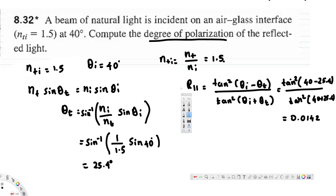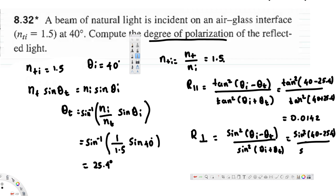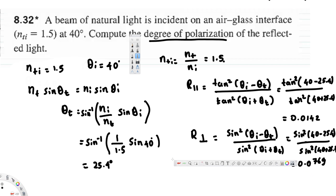Now let's find the reflectance at perpendicular. The equation is sin squared(θ_i − θ_t) divided by sin squared(θ_i + θ_t). Plugging in the values: sin squared(40 − 25.4) divided by sin squared(40 + 25.4). If you calculate this, you get R_perpendicular equal to 0.0769.